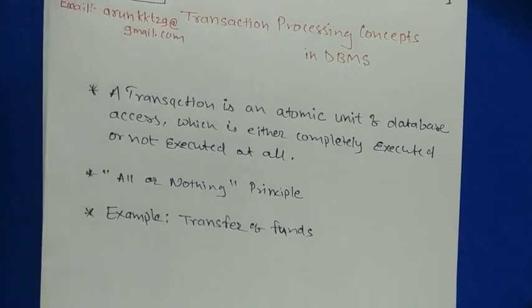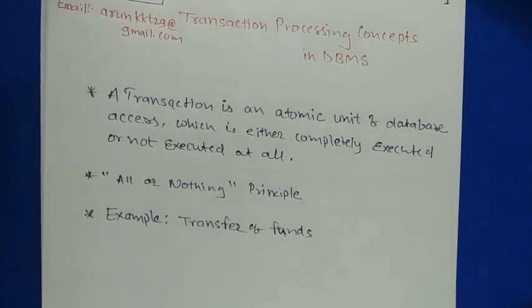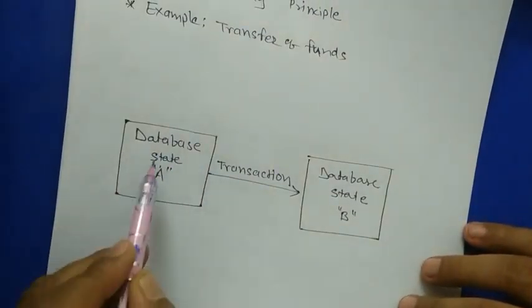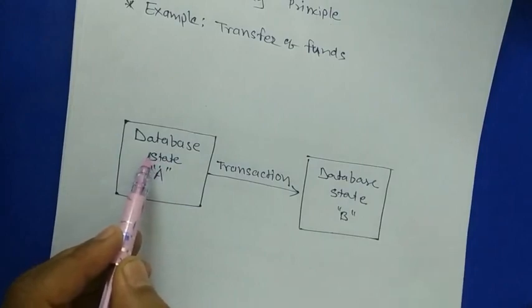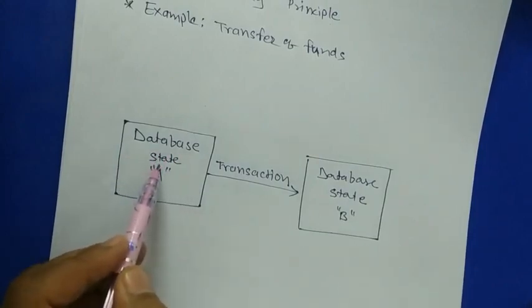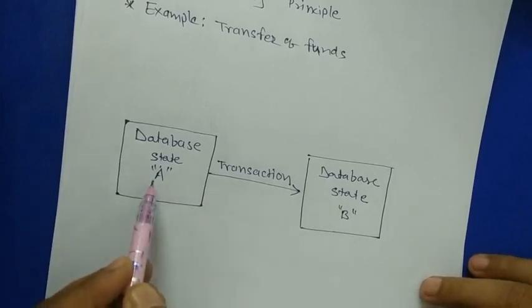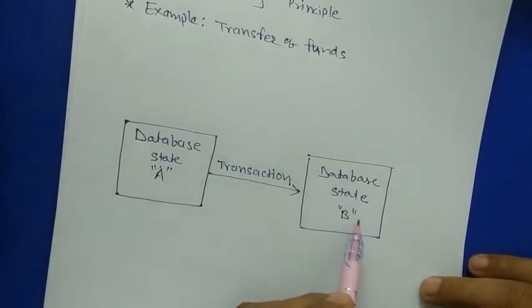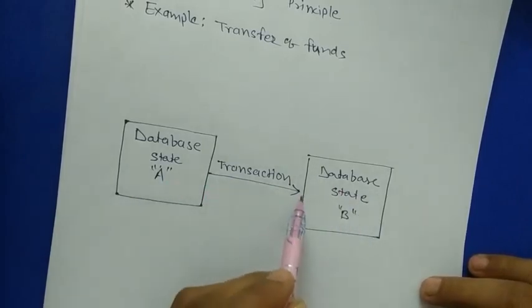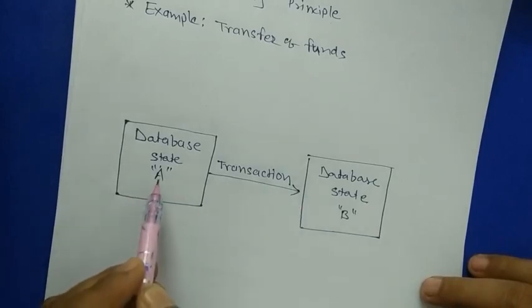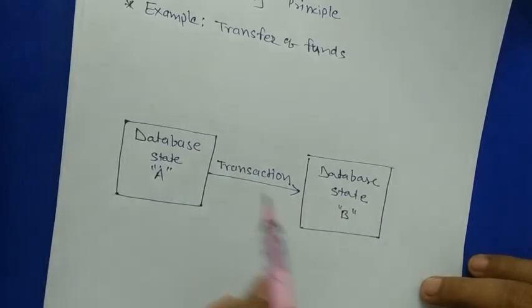Transactions essentially modify the state of the database. The database has some state — suppose state A. A transaction changes that state A to state B. So a transaction is a real-world event that changes the state of the database from one state to another state.